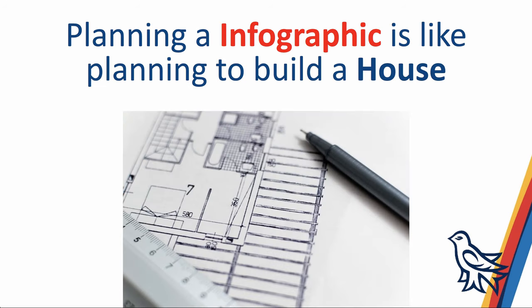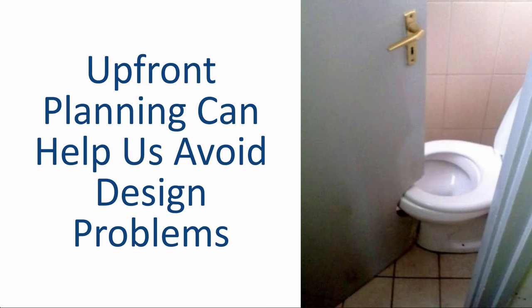Next, planning. You wouldn't start building a house without first creating a plan for how large you want the house to be and where you want the walls, doors, and windows — and the same goes for infographics. Planning can help us avoid design problems. When I plan an infographic, I typically use pen and paper to sketch out important points and doodle possible graphics before I start working in Canva. I'll pull out the important points I want to convey, maybe doodle some sketches, and then go to Canva and start working on the infographic.